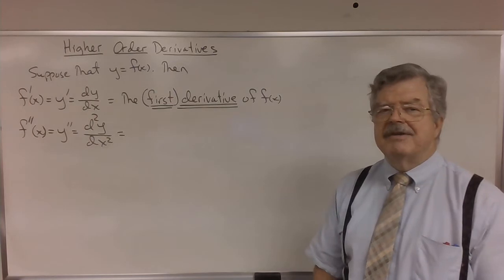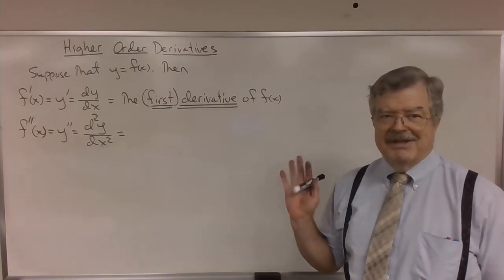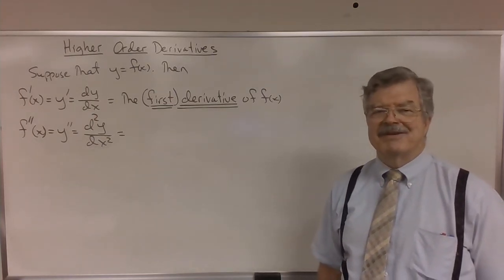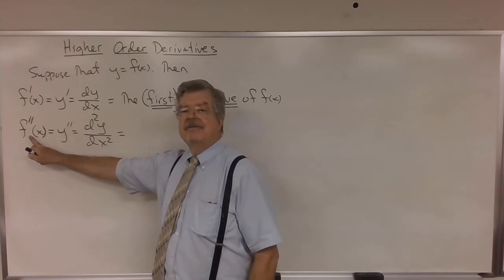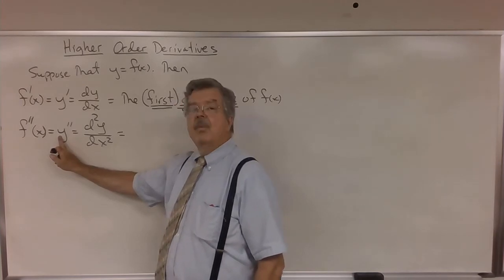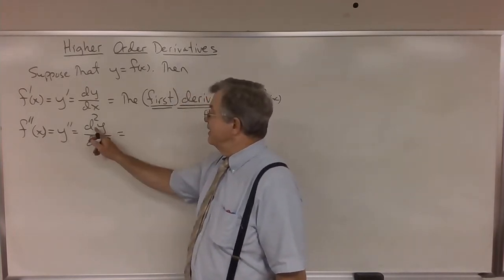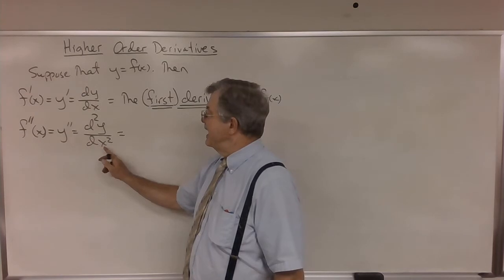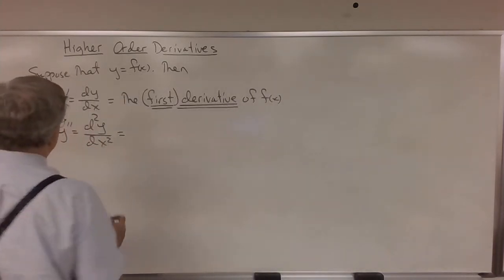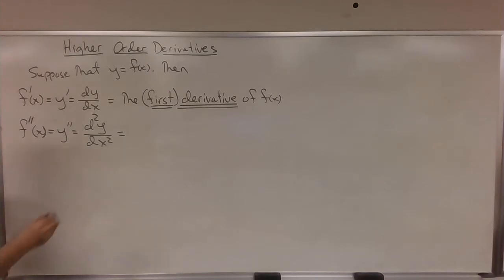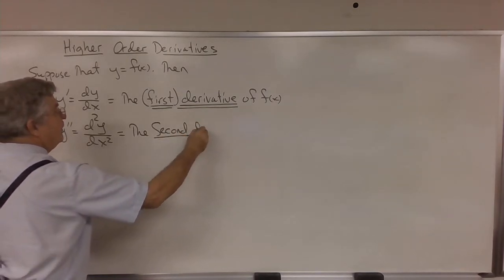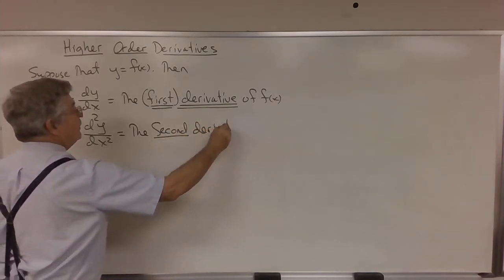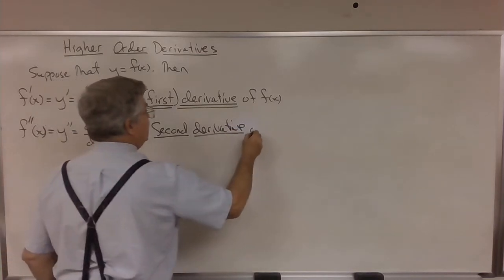And if there's a first derivative of f of x, I guess there must be a second derivative of f of x, right? And here it is. We call this the second derivative, also known as f double prime of x, y double prime of x, or d squared y dx squared. These symbols represent the second derivative of f of x.